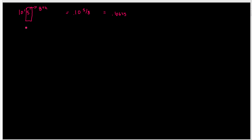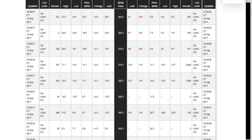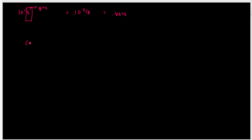We have to figure out the cost for a bushel of corn. One corn contract is 5,000 bushels. We take our cost of $0.10625 and multiply by 5,000 bushels, which gives us a cost of $531.25. That is the answer to part A, and the cost of $531.25 is also the answer to part B.